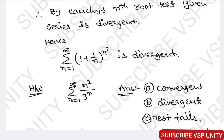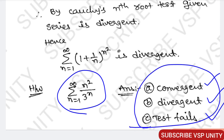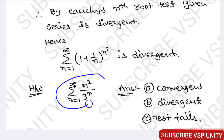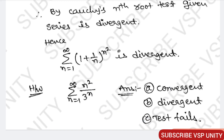I have given one practice problem: sum of n equals 1 to infinity of n² / 3^n — is it convergent, divergent, or does the test fail? Decide which test is suitable for this problem, apply it, and find the answer. Write your answer in the comments section. Like and share the video, and if you have any doubts, comment below.